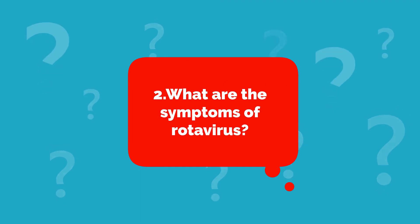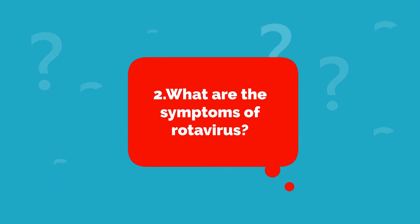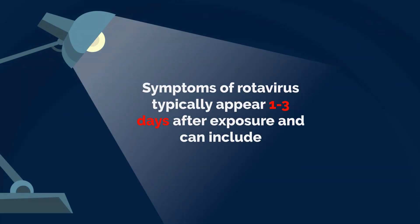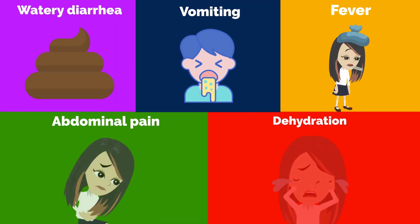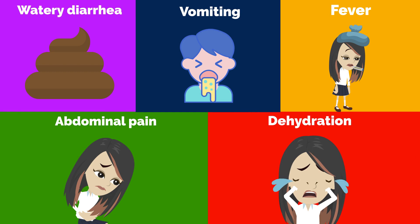What are the symptoms of rotavirus? Symptoms of rotavirus typically appear 1 to 3 days after exposure and can include watery diarrhea, vomiting, fever, abdominal pain, and dehydration.